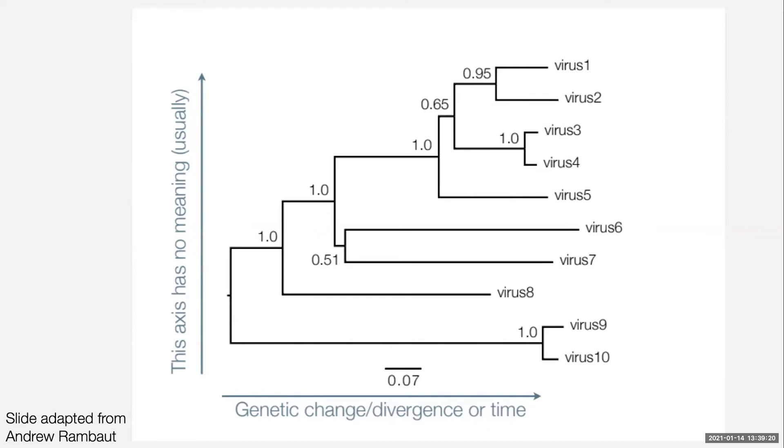The tips that we've got are our sample taxa, so they're our sample viruses. For SARS-CoV-2, this usually corresponds to one patient. So each of our tips is a patient that we might be interested in.